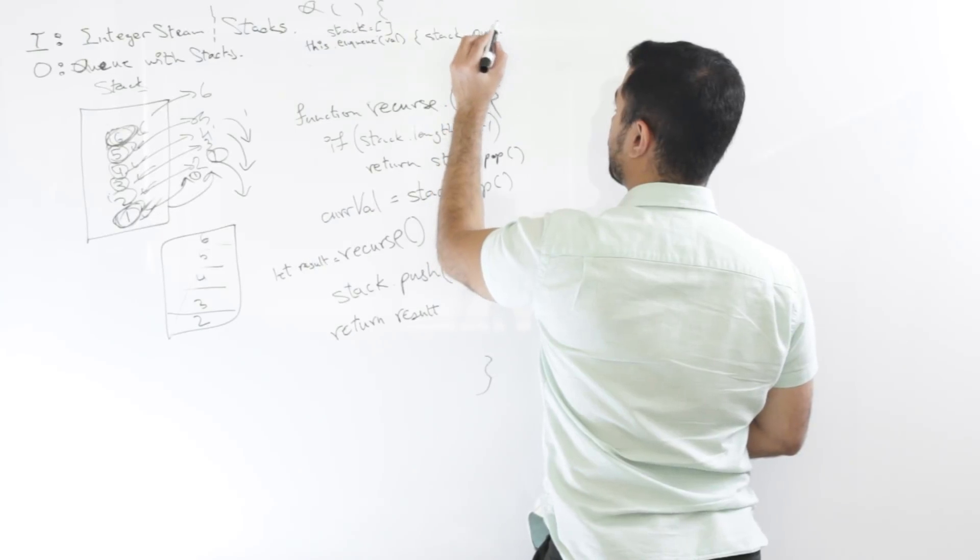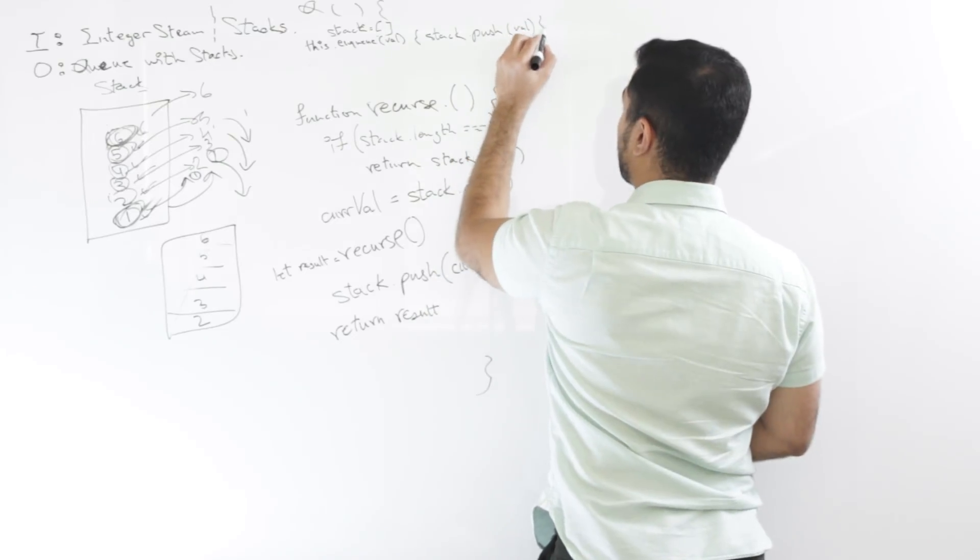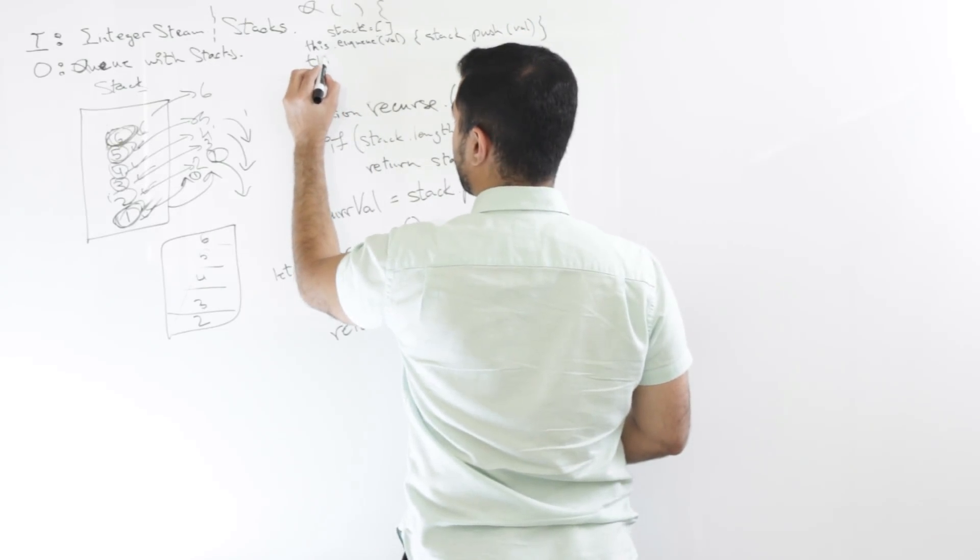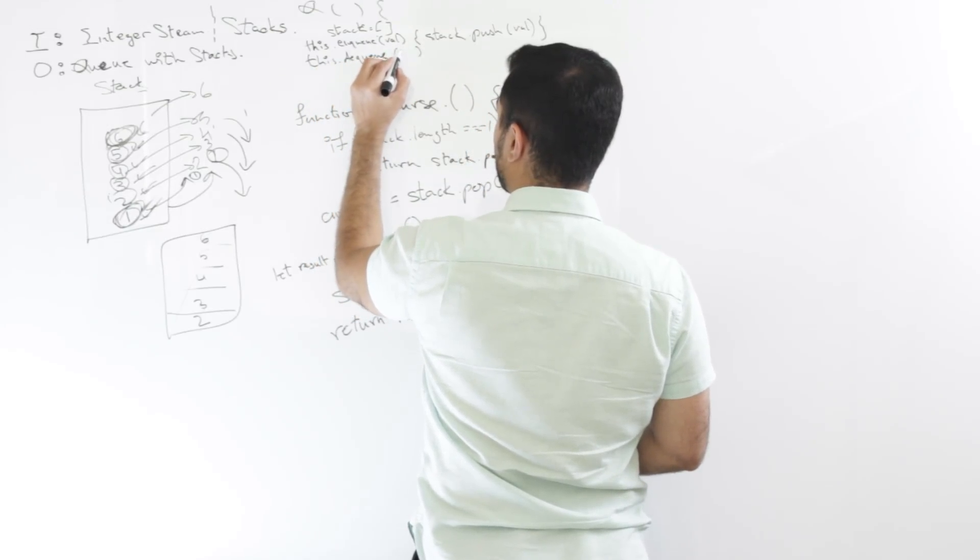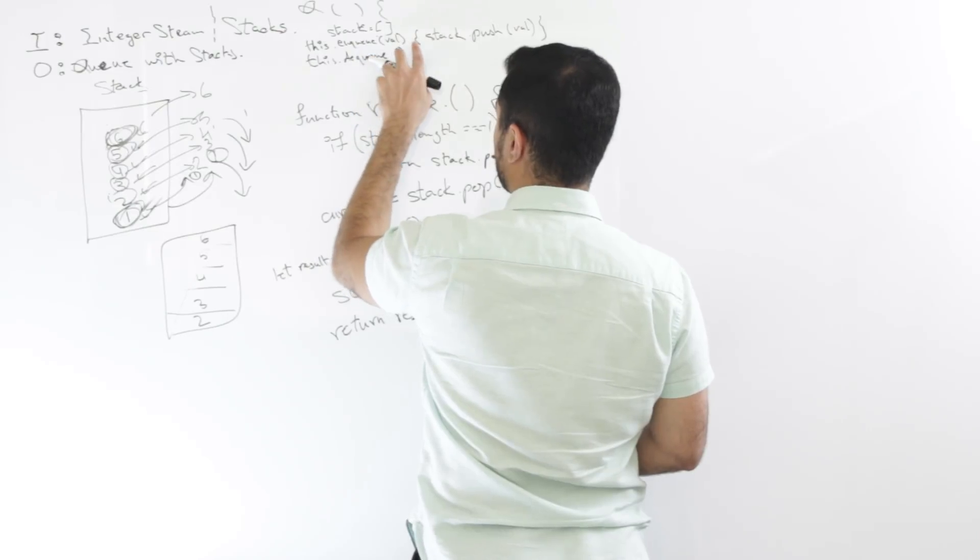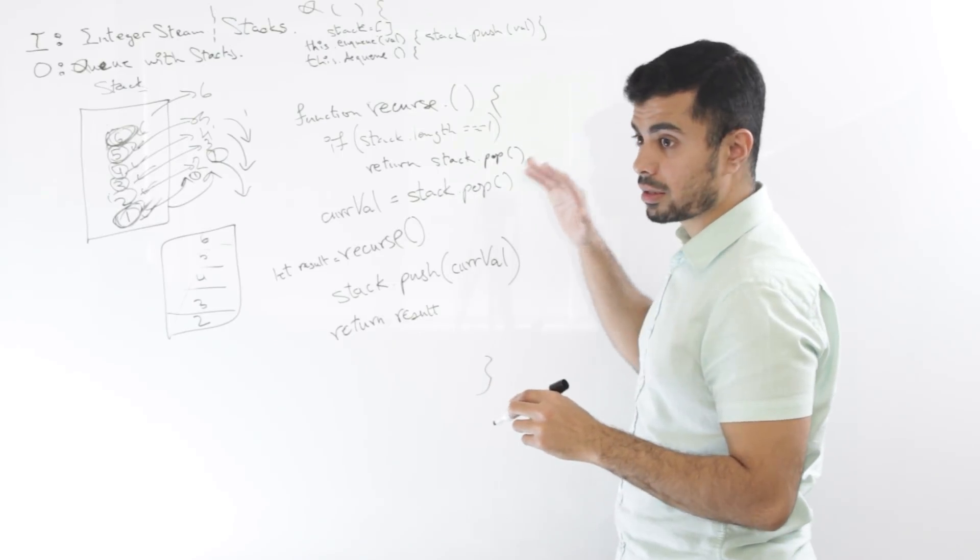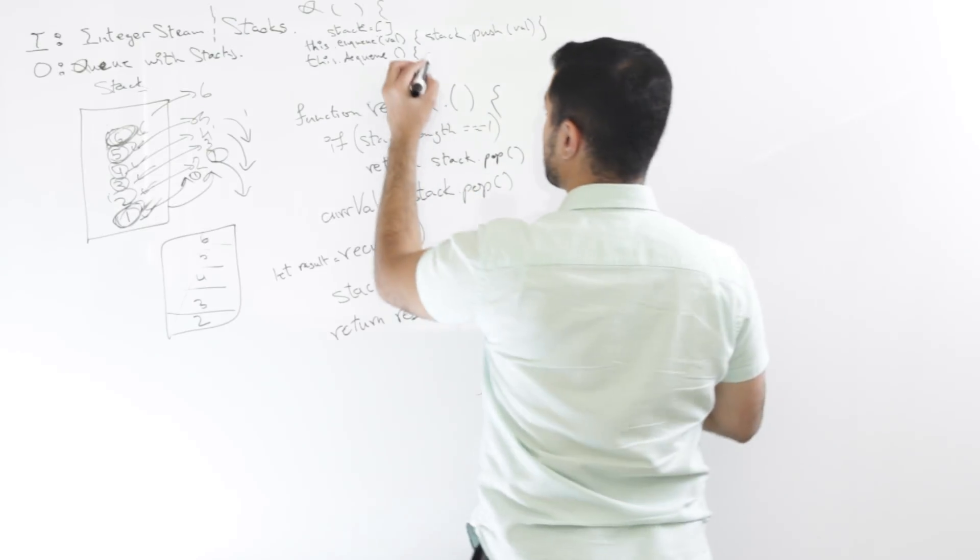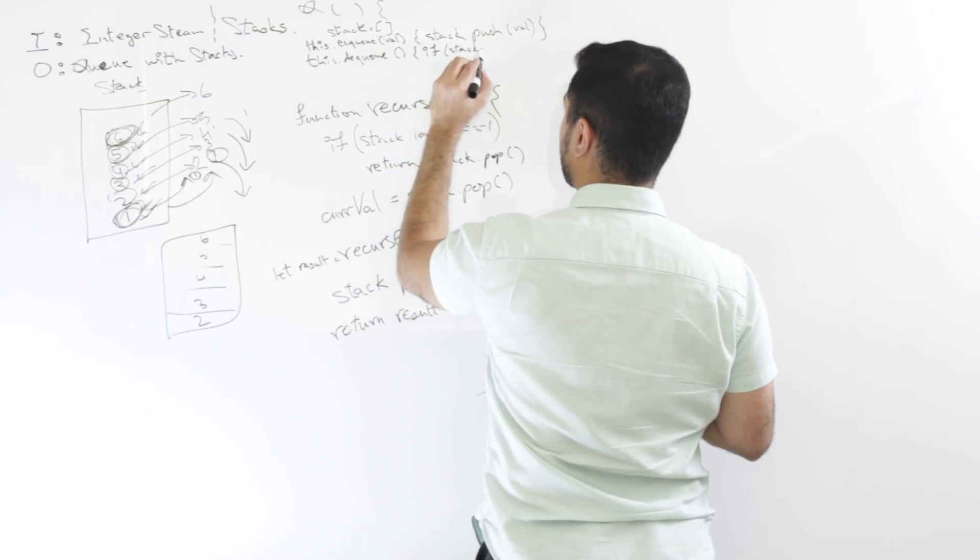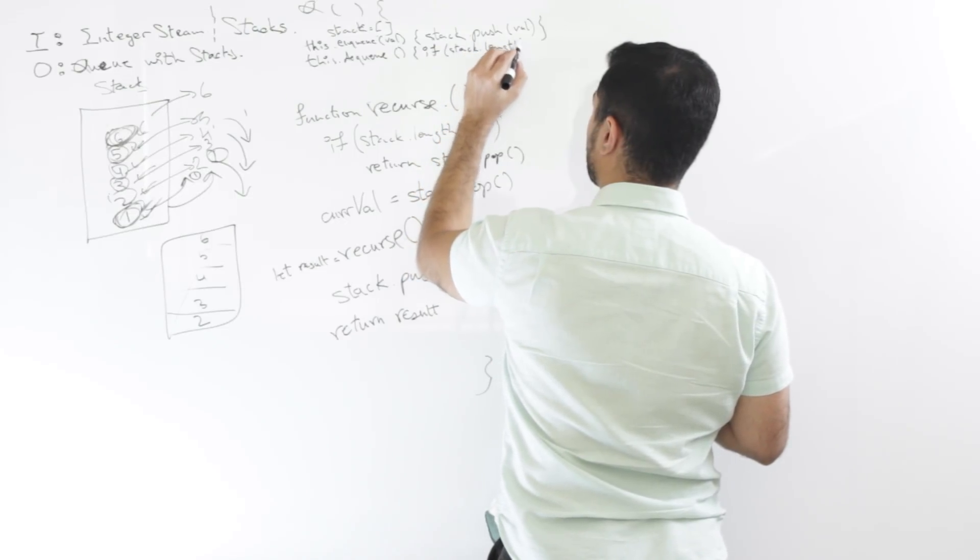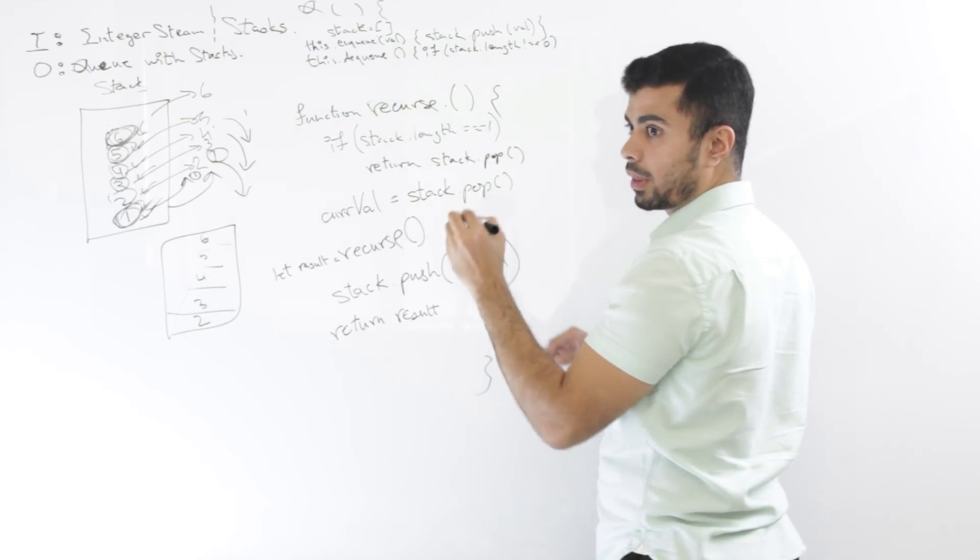Right? I see. Now on the other hand, when I have this dot dequeue, let's say it takes in a, it doesn't take in anything, right? So it's just a command. So in this case, it'll say, okay, I want to dequeue something. Let me make sure that there is something in the stack already. Let's say it's equal to zero.